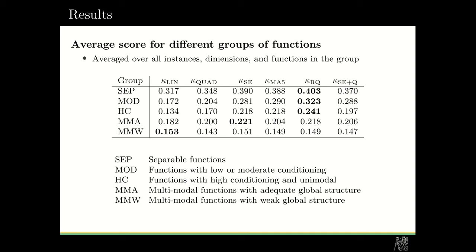So the results of our algorithms. Here we have average score for different groups of functions from the benchmark set, and it's averaged over all instances and all dimensions and all functions of the group. As we can see the first three groups are dominated by the rational quadratic kernel, and the fourth group, the best one is the squared exponential, and for the last one the best one is the linear kernel. So we can see that on the easier problems the best choice would be the rational quadratic kernel, and those harder functions might be solved best by squared exponential or linear kernel.